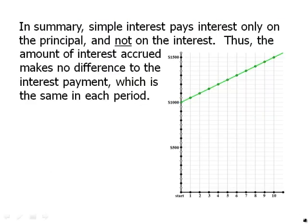Simple interest pays interest only on the principal and not on the interest. Thus, the amount of interest accrued makes no difference to the interest payment, which is the same in each period. And indeed, as this graph shows, if we were to graph the amount in the account versus time, it would rise as a straight line. All that's happening each year is another $50 is being added — that's why it rises at a constant slope.